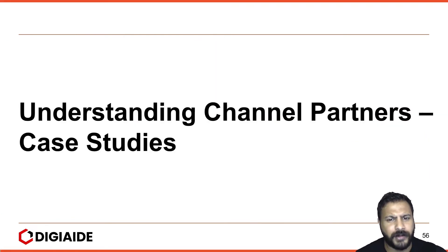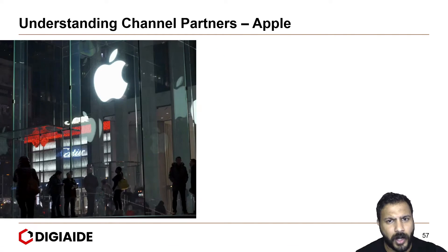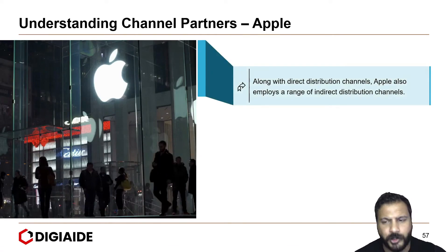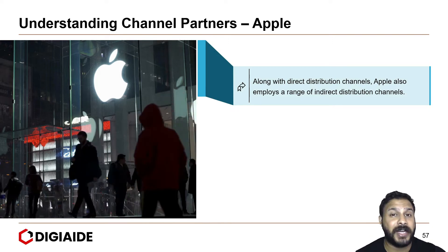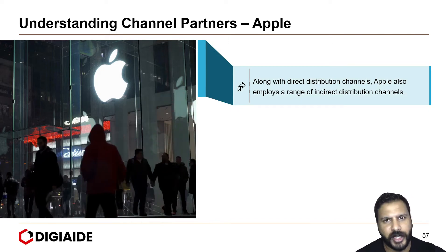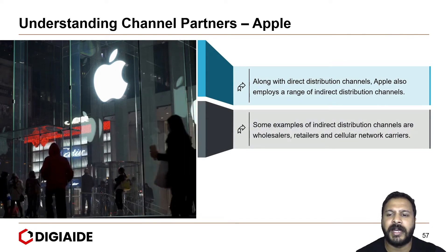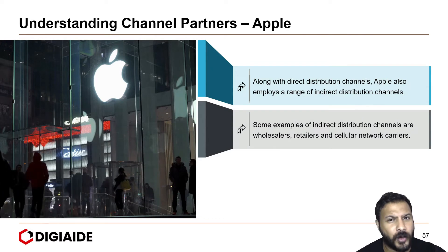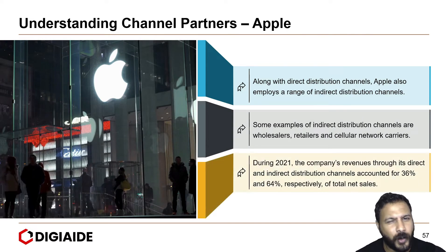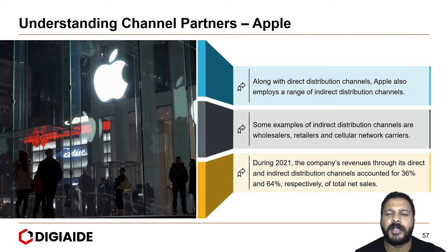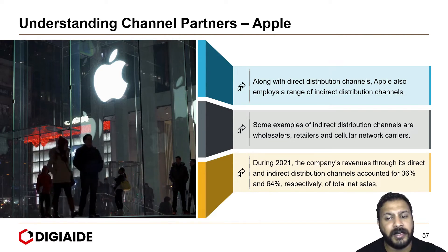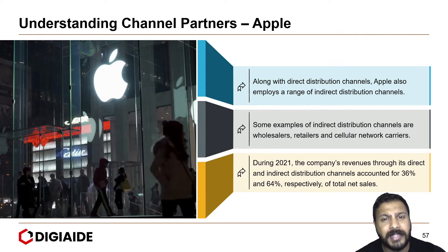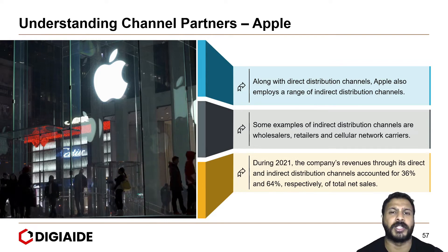Let's look at some case studies of understanding channel partners. First, Apple. Along with a direct distribution channel, Apple also employs a range of indirect distribution channels. Some examples of indirect distribution channels are wholesalers, retailers, and cellular network carriers. In fact, during 2021, the company's revenue through its direct and indirect distribution channels accounted for 36% and 64% respectively of total sales.